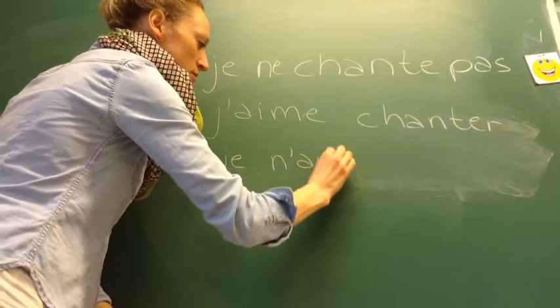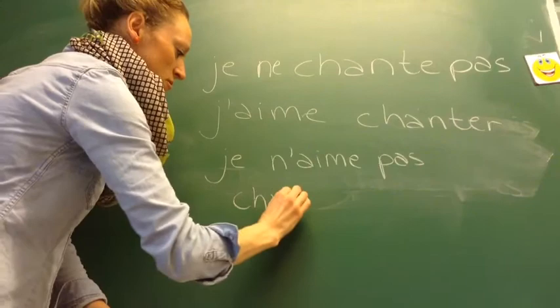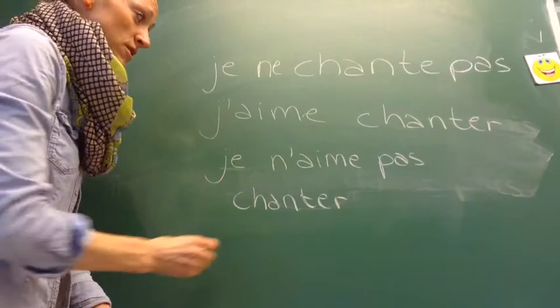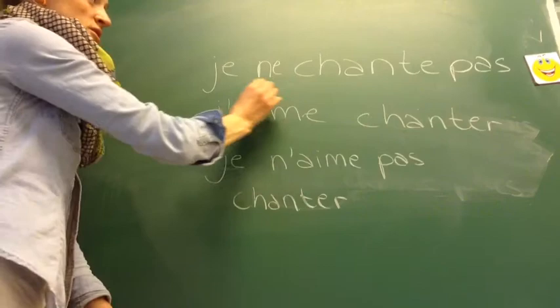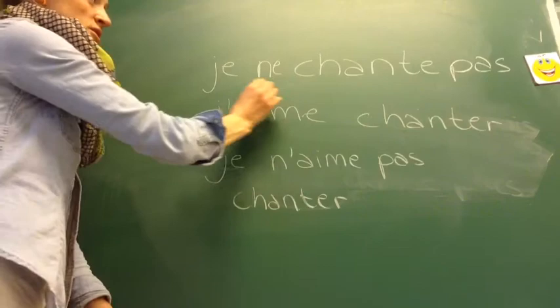Kan I se den? 'Je n'aime pas chanter' – jeg kan ikke lide at synge. Her er nægtelsen rundt omkring aime, og 'chanter' står for sig selv til sidst. Herovre står det uden nægtelse. Og heroppe står der bare 'jeg synger ikke'. Jeg synger ikke. Jeg kan lide at synge. Jeg kan ikke lide at synge.